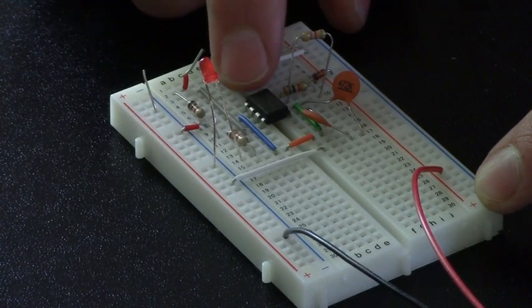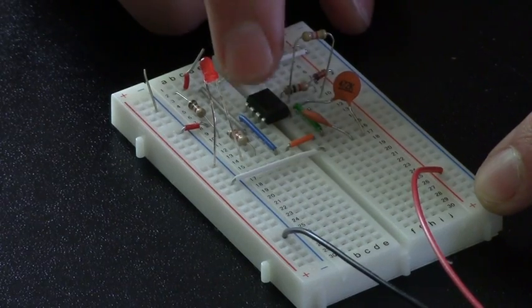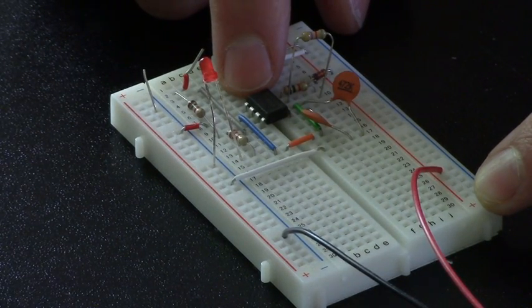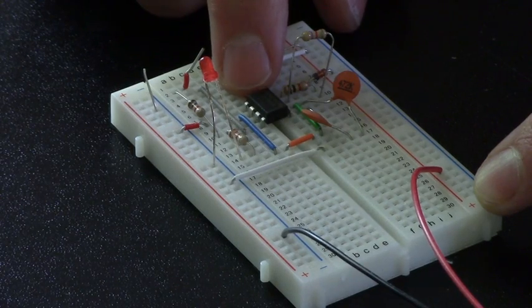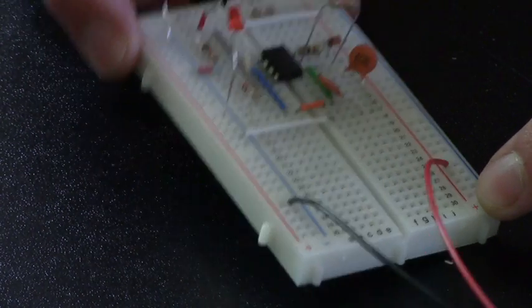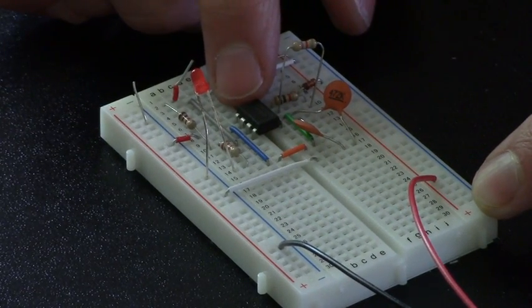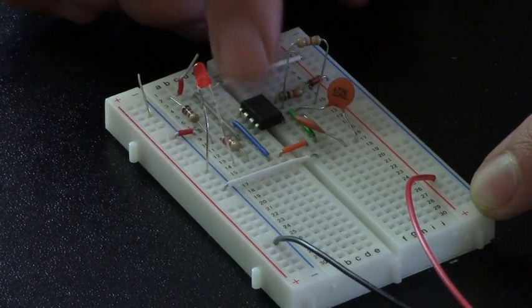And you also have to make sure that when you do put this in on the breadboard that you're aware of where the little circle is. So the instruction sheet tells you where pin 1, and pin 1 has a little dot that's imprinted right in the plastic. So that has to be in the proper place.